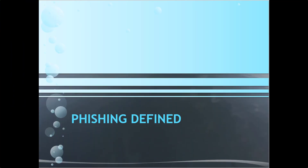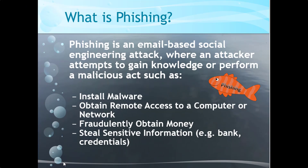Now we're going to go to our phishing definitions. Phishing is an email-based social engineering attack where an attacker attempts to gain knowledge or perform malicious activity. Some of the things include: install malware, steal credentials, gain remote access, fraudulently obtain money, and steal sensitive information.